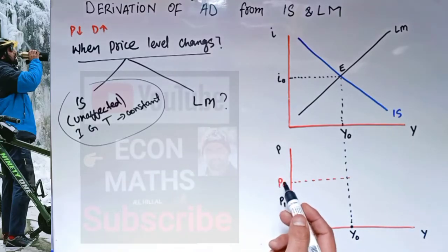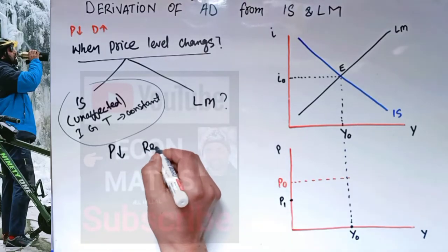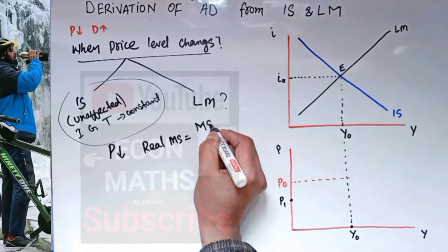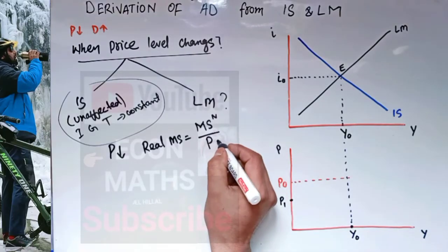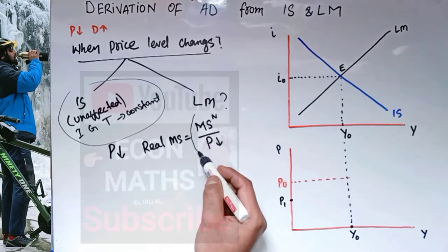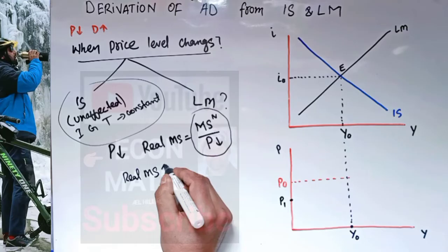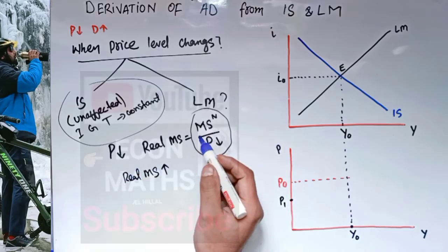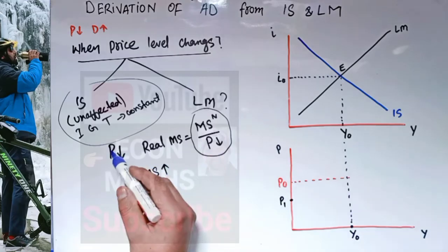But what happens to the LM curve? When price decreases from P₀ to P₁, what happens to real money supply? We know real money supply is simply equal to nominal money supply divided by the price level. When the price level has decreased, the denominator has decreased, so the whole term — real money supply — will increase.